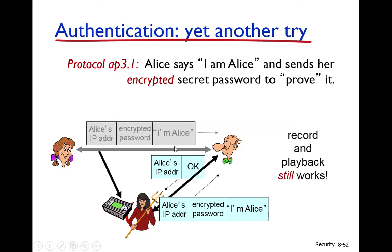However, Protocol AP 3.1 can also fail via a playback attack. When Alice was talking to Bob, Trudy — the man-in-the-middle — intercepted and stored a copy of the message. After the communication is done, Trudy sends this copied message back to Bob. Since it contains the encrypted password, Bob decrypts it and thinks the message is from Alice.